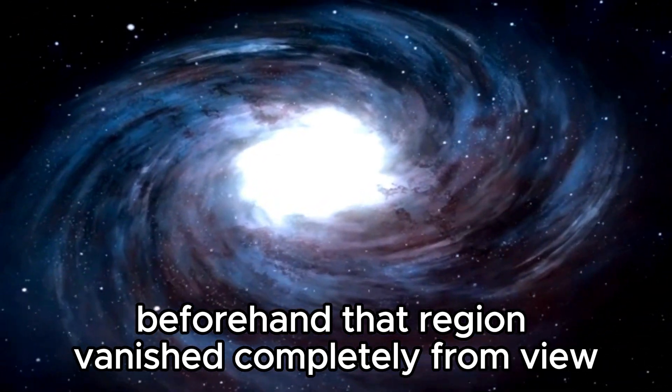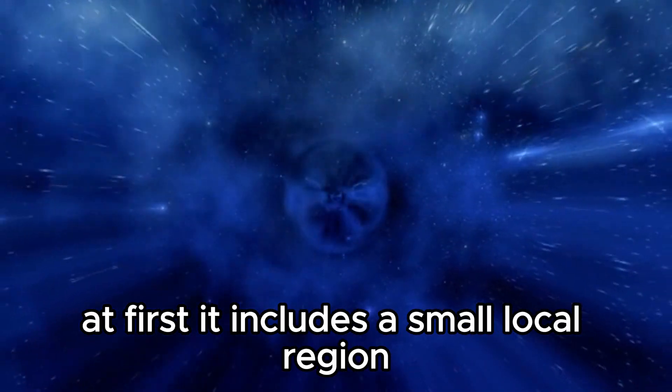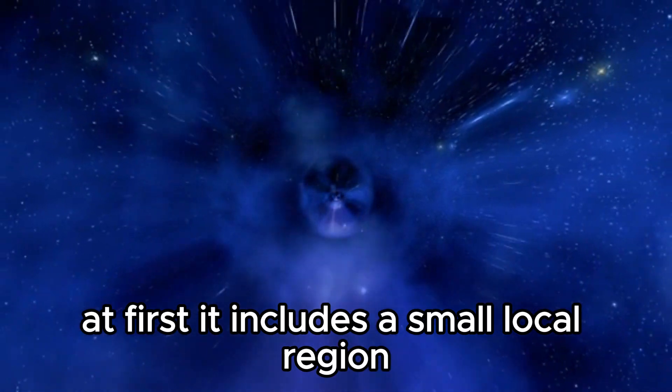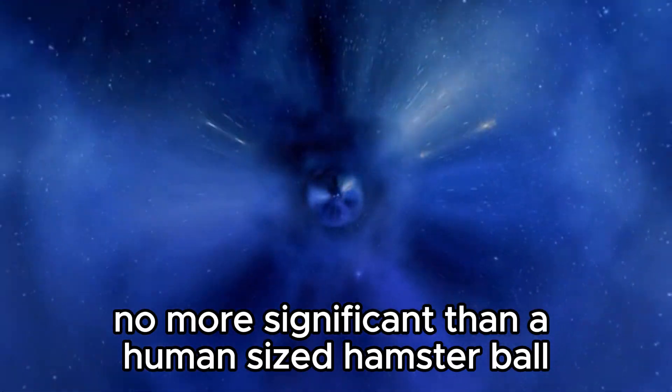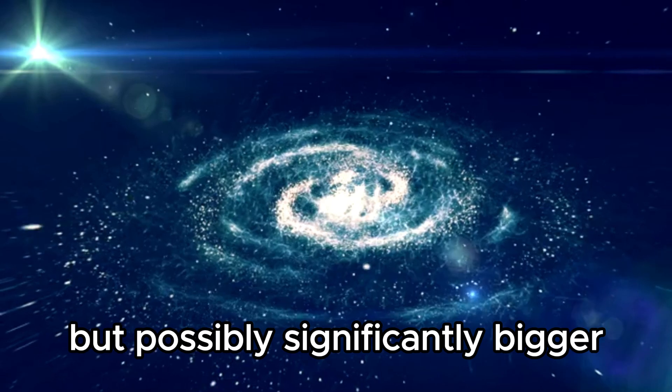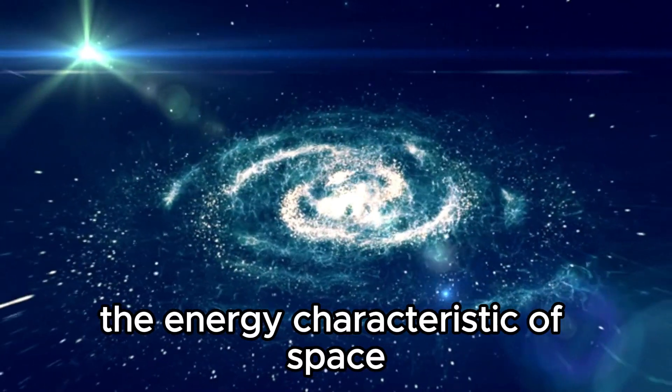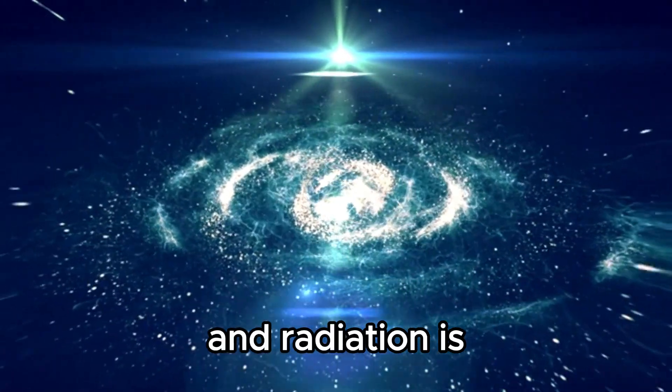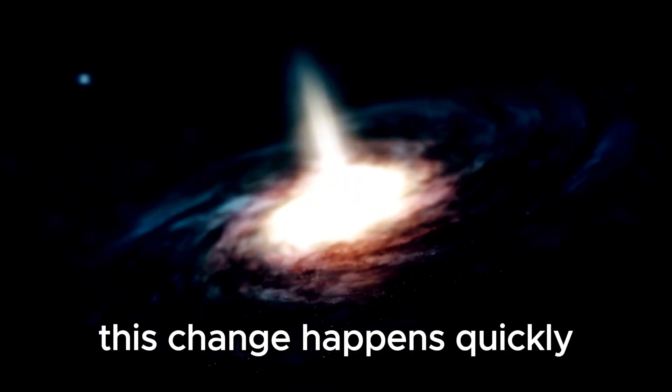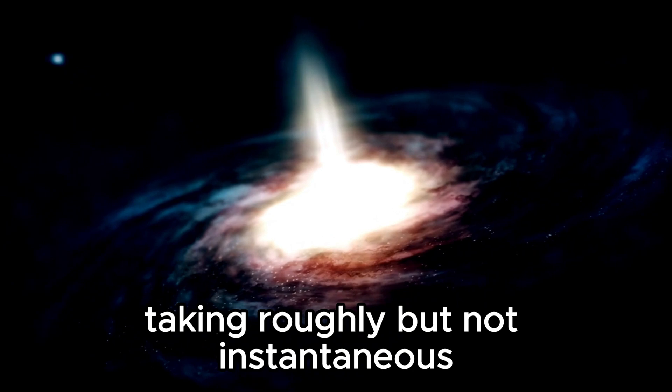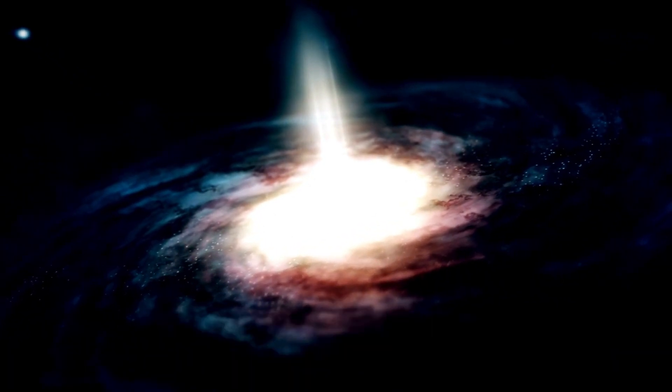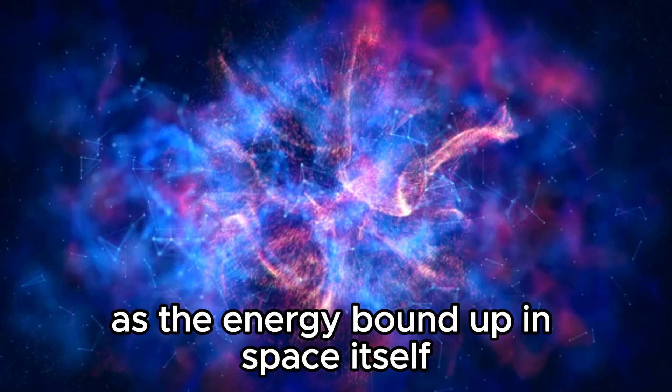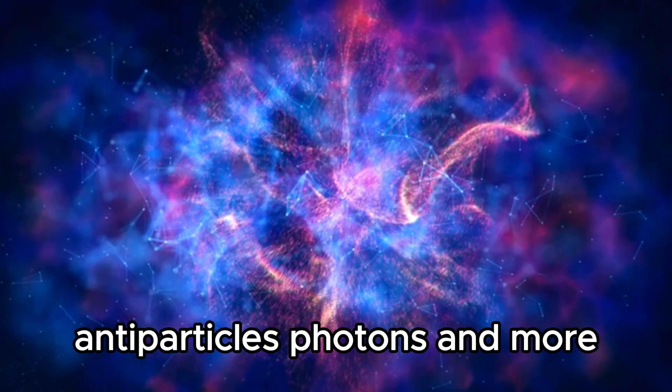That region vanished completely from view at first. It includes a small local region, maybe no more significant than a human-sized hamster ball, but possibly significantly bigger. The energy characteristic of space then gets changed over into matter and radiation. This change happens quickly, taking roughly but not instantaneous. As the energy bound up in space itself changes over into particles, antiparticles, photons, and more.